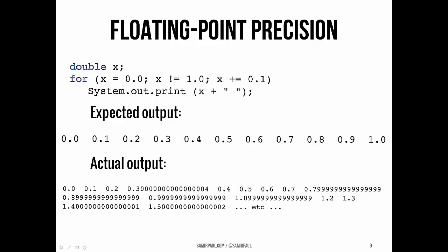The same sort of thing is happening here. When one-fifth is represented in binary as a double, well, it's also not exact. So x never equals exactly 1.0 and the loop never actually terminates.